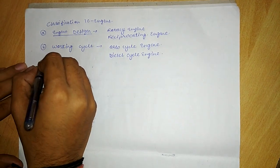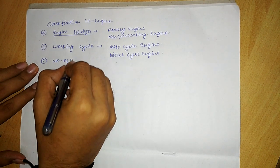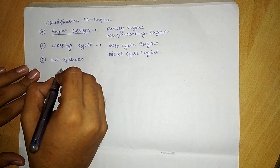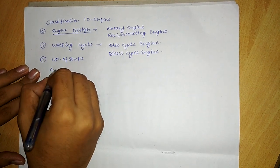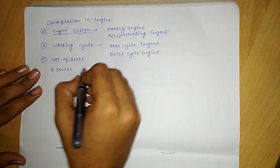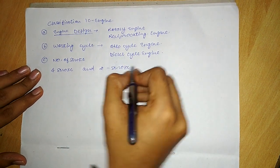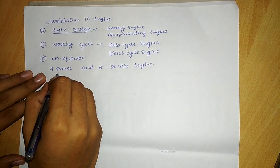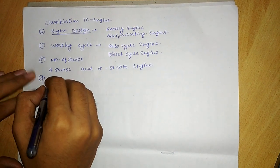The third classification is on the basis of number of strokes. On the basis of number of strokes, these are classified as four-stroke and two-stroke engines — the first one is the four-stroke engine and the second is the two-stroke engine.